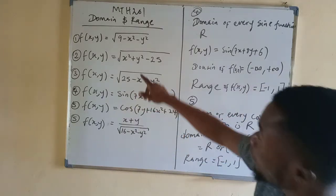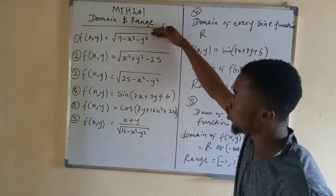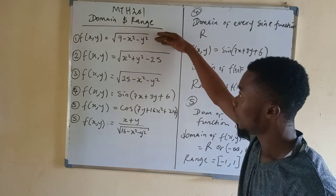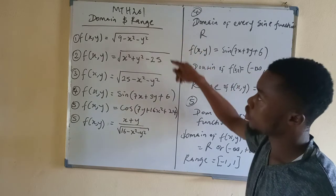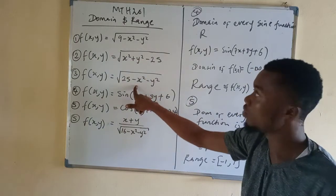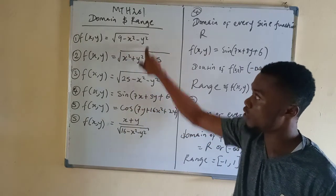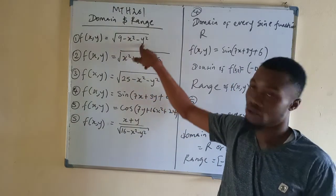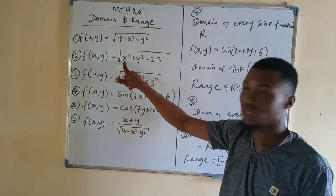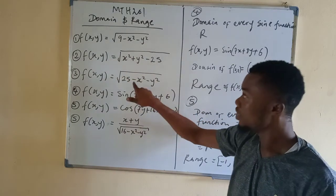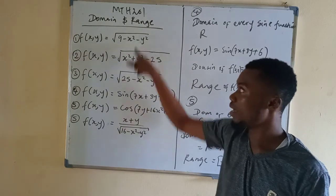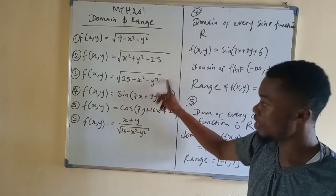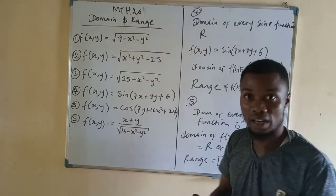So now let us look at questions 1, 2, 3. If you look at number 1 and number 3, you find that they look similar: 9 minus x squared minus y squared, versus 25 minus x squared minus y squared — a number first then minus x squared minus y squared. But for number 2 it starts with x squared and y squared before the number. I will solve the ones that look different, and number 3 will be your exercise.